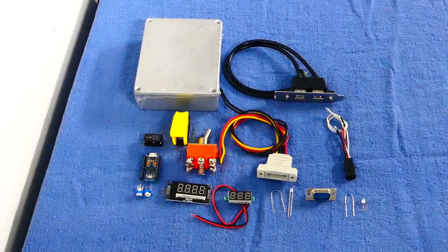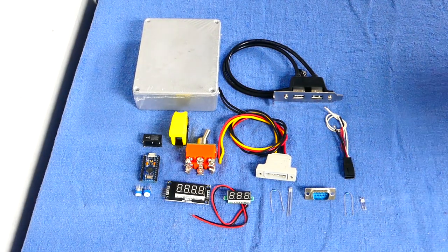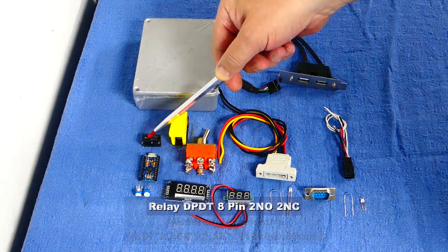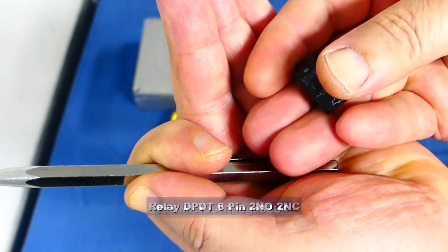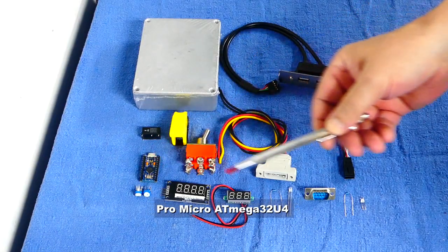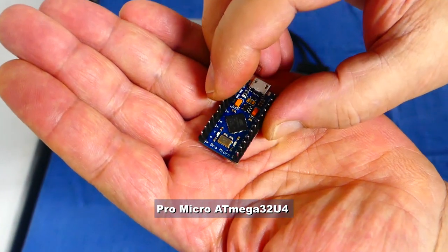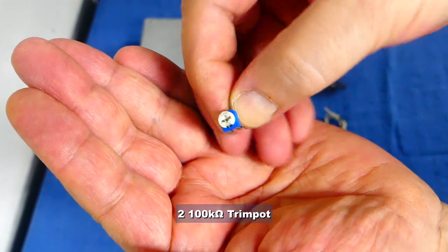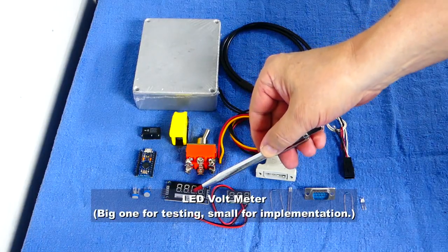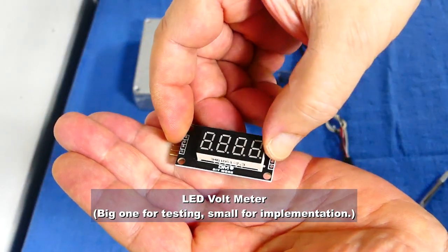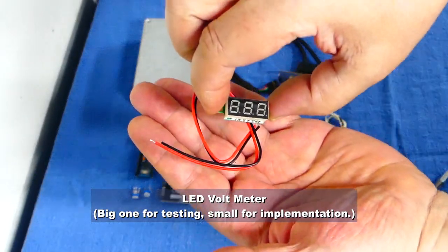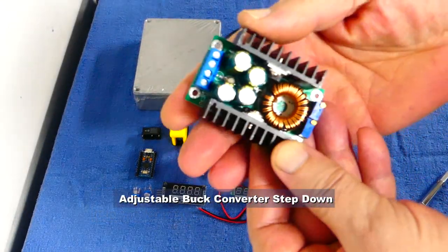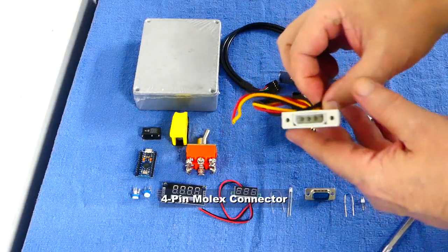I laid out all the parts I used for the switch box, starting out with the aluminum case I got from AliExpress. Then I have a relay, the microcontroller Arduino Micro ATMEGA, two turn pots each 100 kiloohm, two LED voltmeter modules, and the bigger one I only use for testing. Here's the buck controller and a Molex connector female.